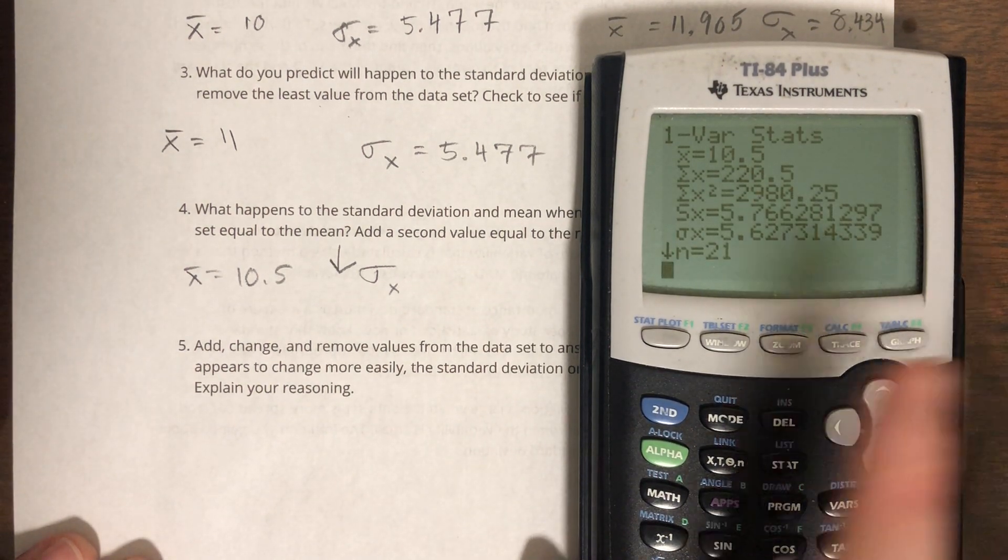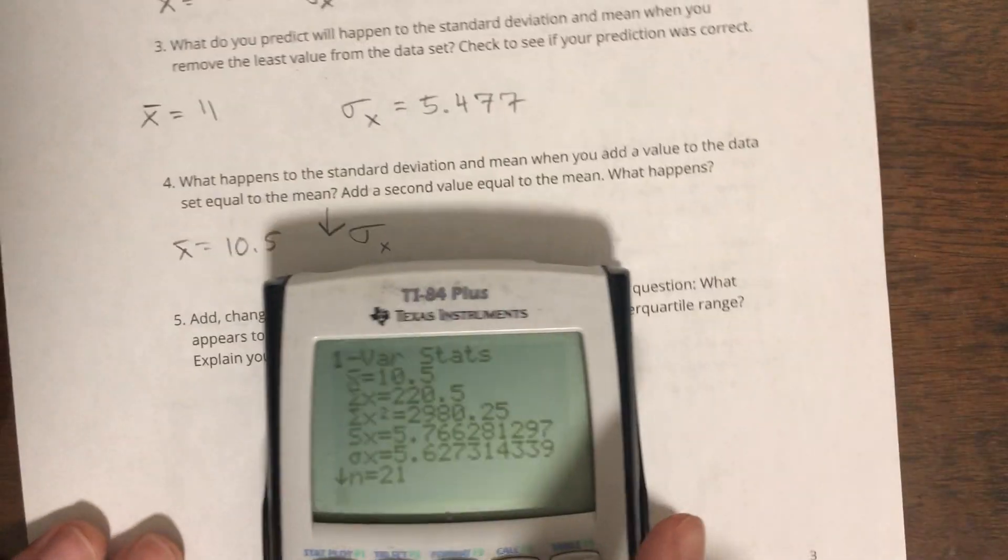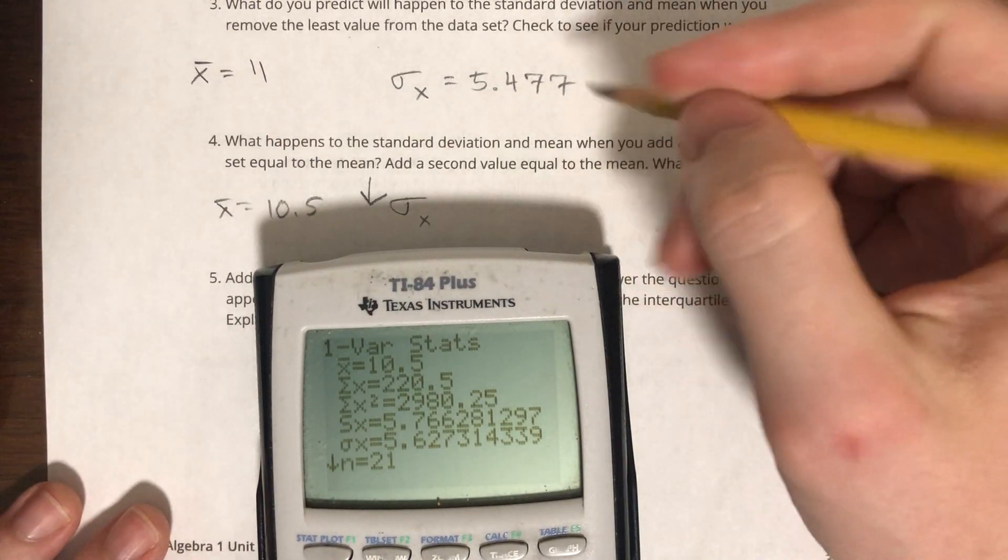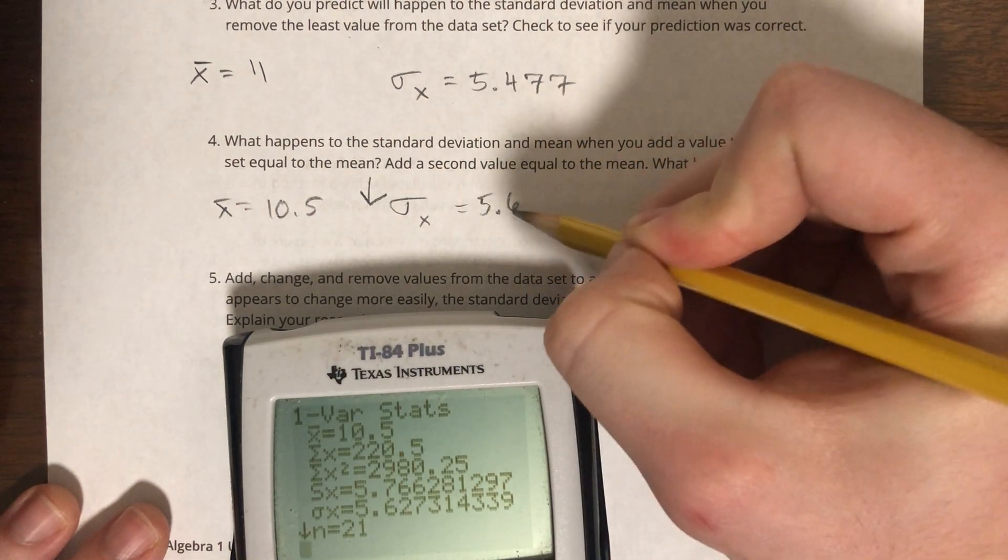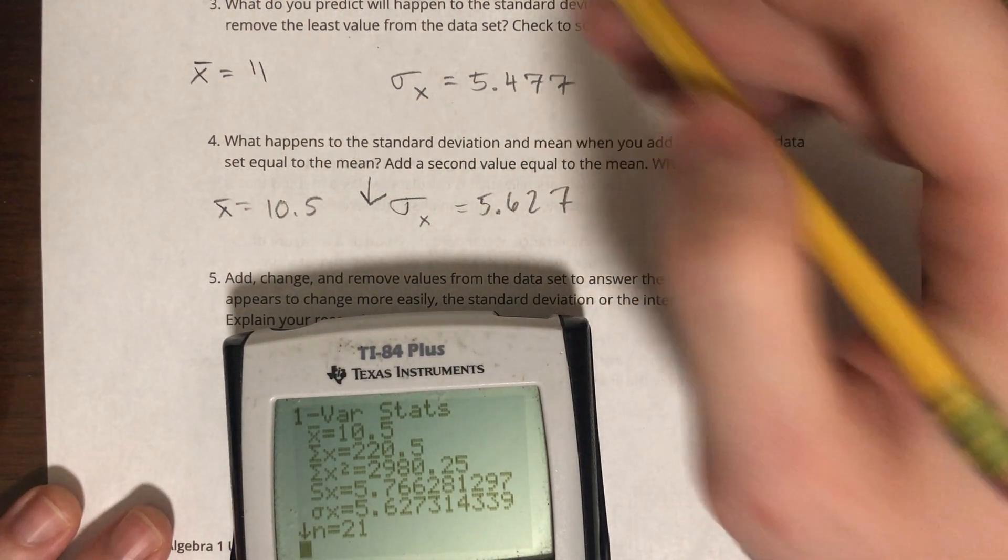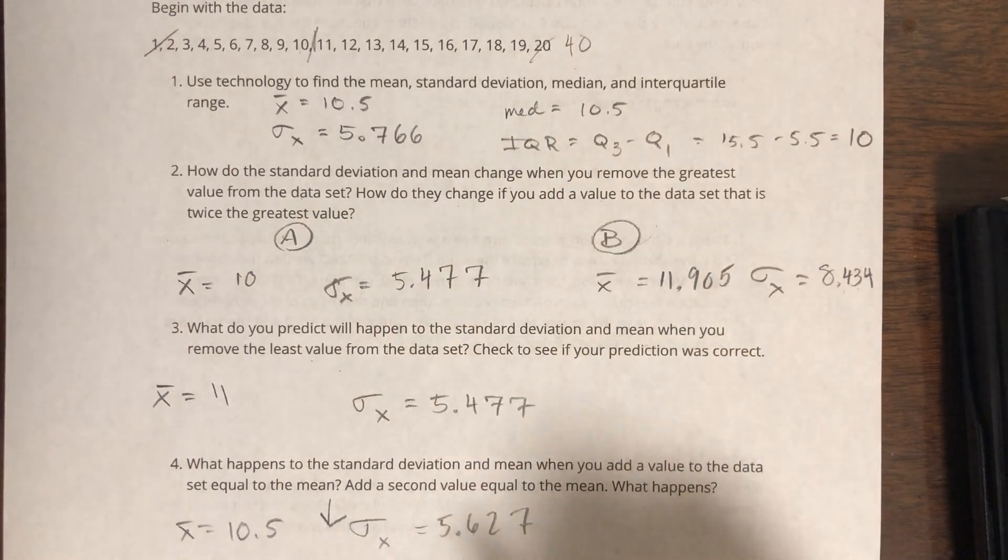And we get a mean of 10.5 and a standard deviation of 5.627, which is exactly... no, I'm sorry, not exactly. It is lower than our original standard deviation.